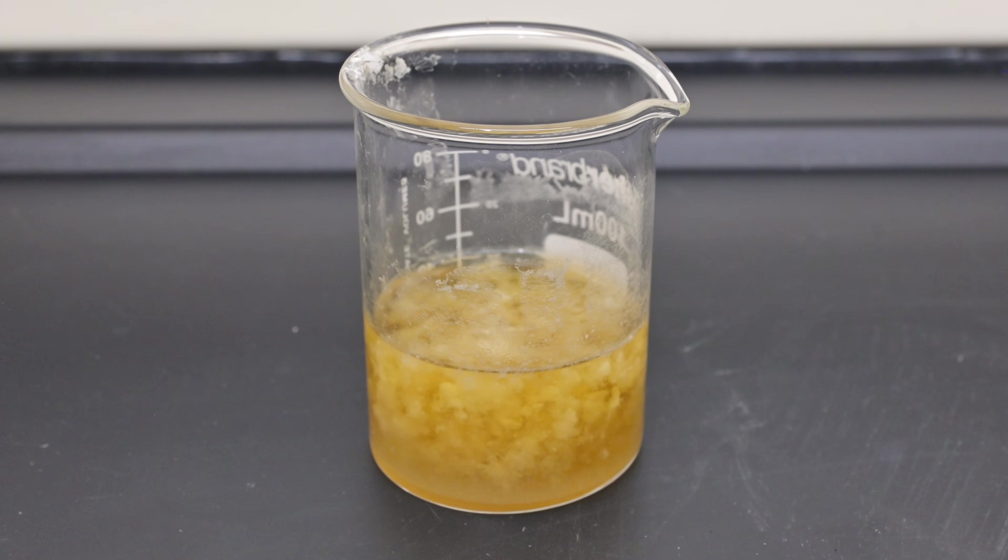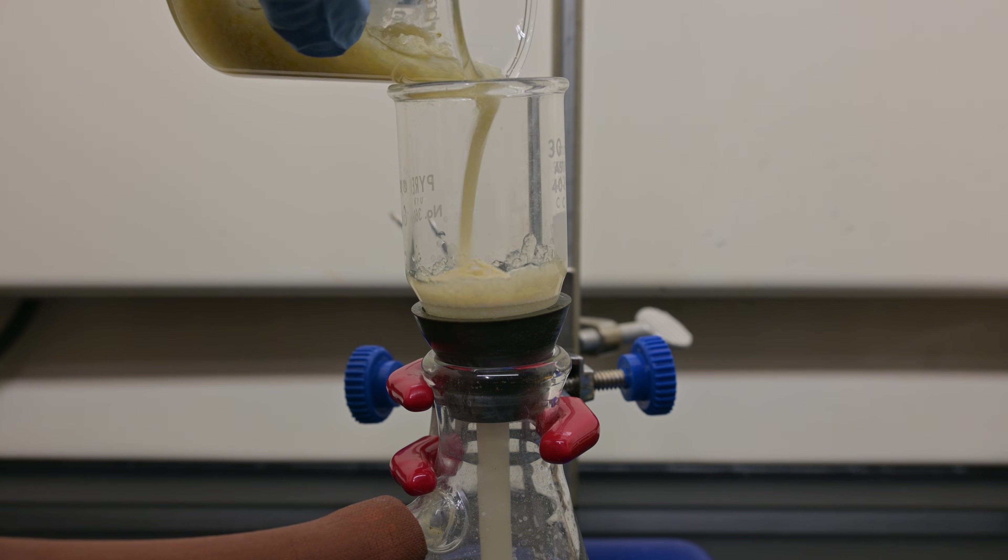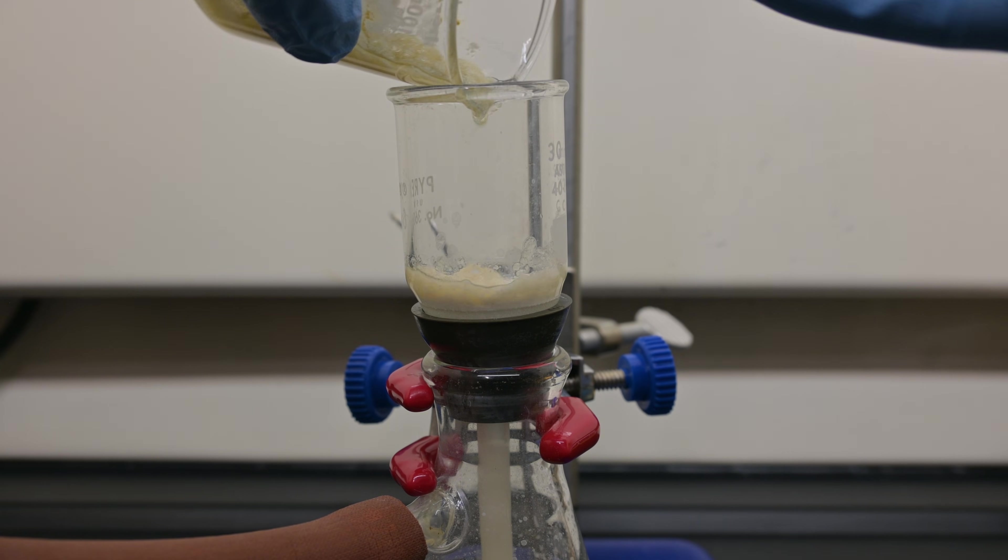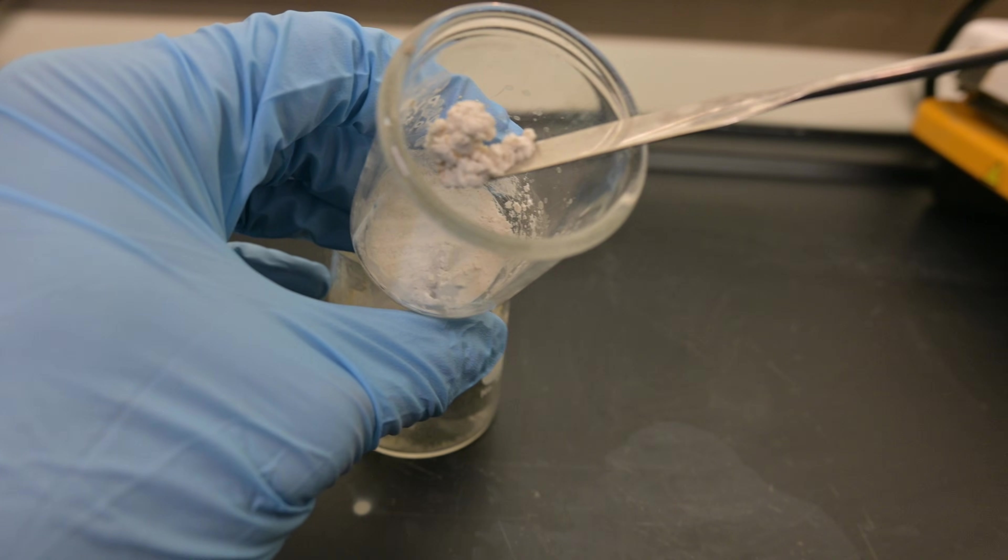Once cool, all the caffeine should have crystallized out, leaving us with a solution of impurities and a solid caffeine product. I then performed a vacuum filtration and washed the crystallized caffeine with cold petroleum ether acetone mix. This left us with a nice clean caffeine powder, with only a slight tinge to it.